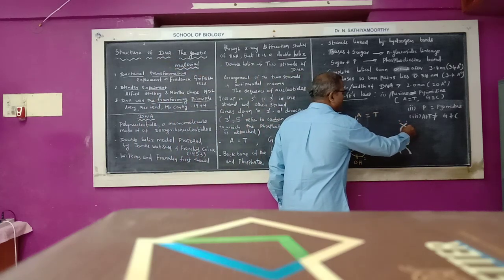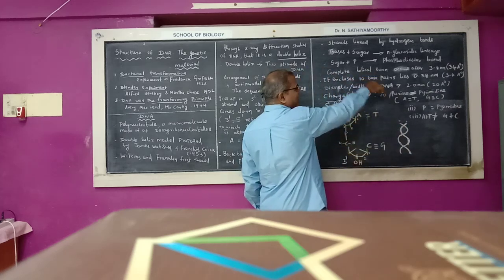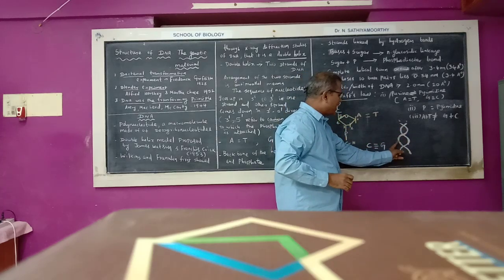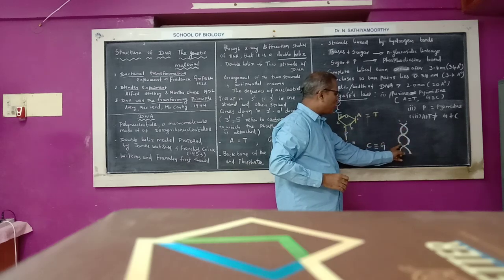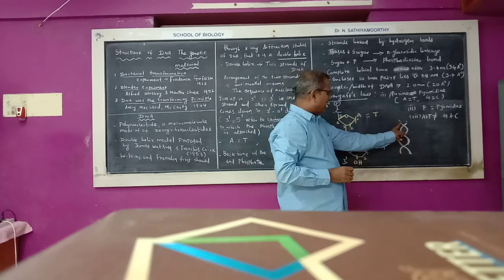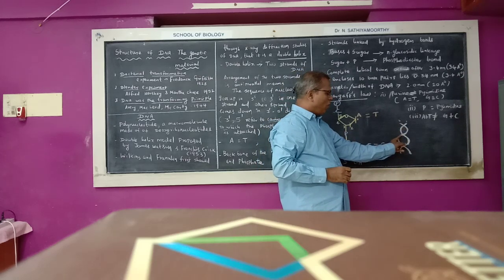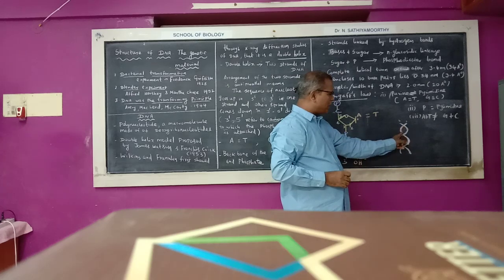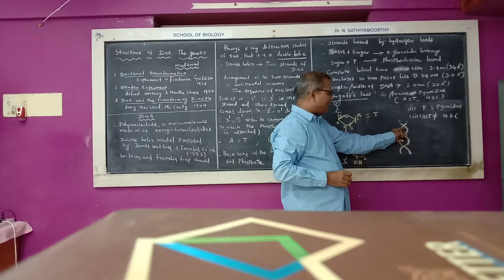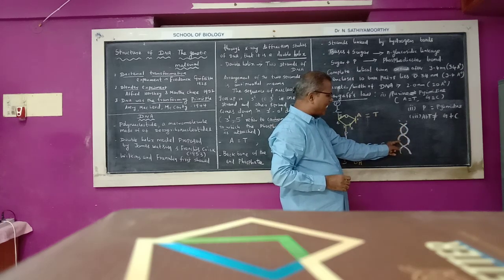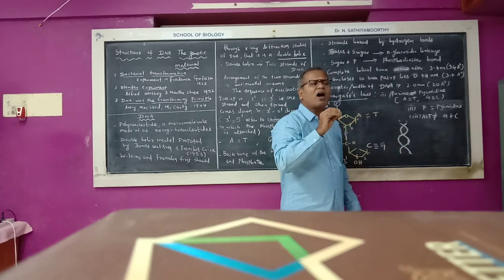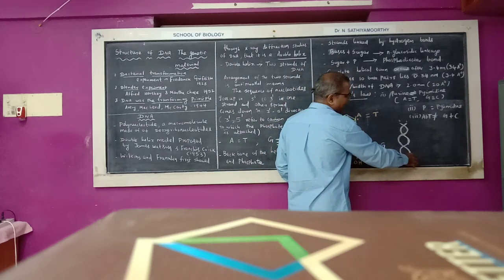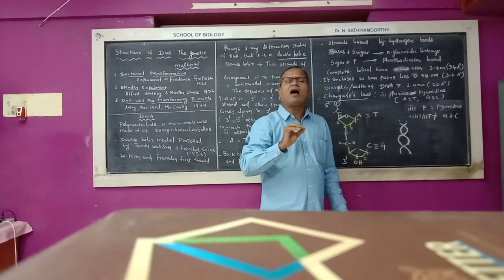The complete helical turn of DNA has a length of 3.4 nanometers (or 34 angstroms), and each complete rotation contains 10 nucleotides. The inter-nucleotide distance is 0.34 nanometers (or 3.4 angstroms). The diameter (width) of DNA is 2 nanometers (or 20 angstroms).